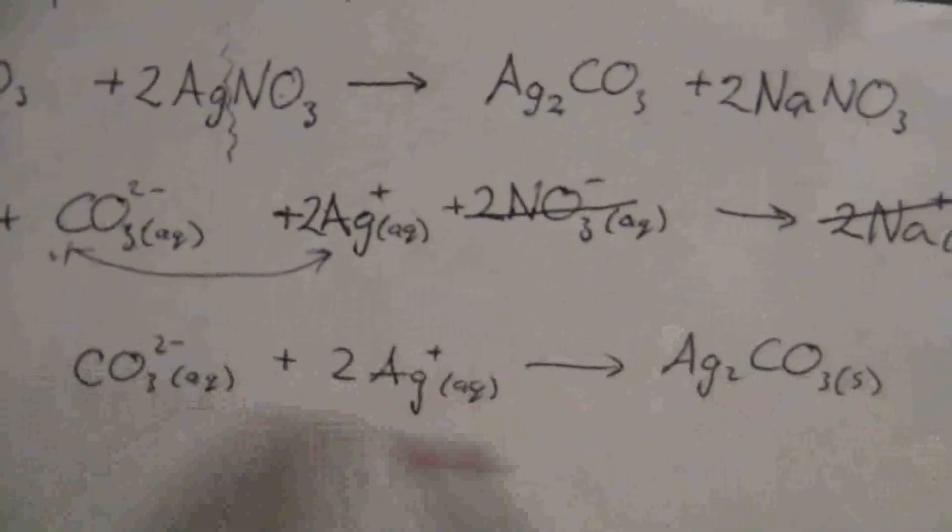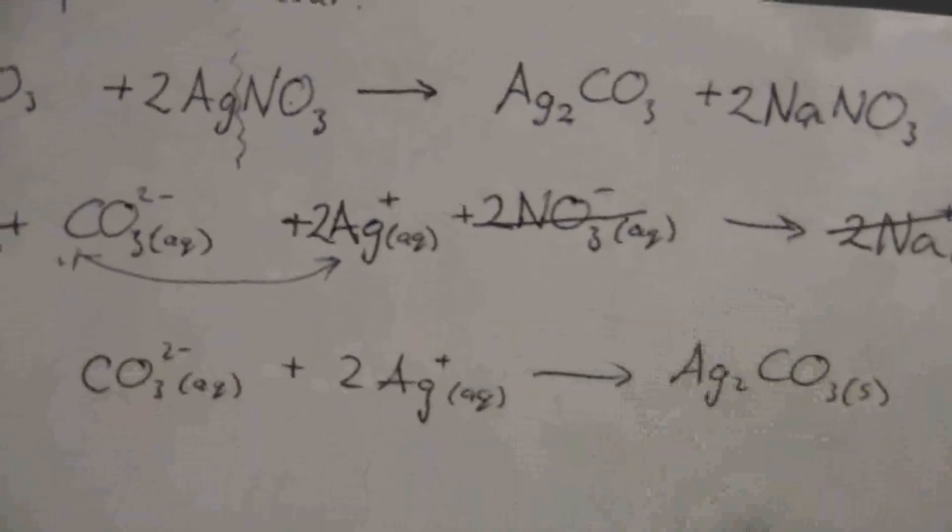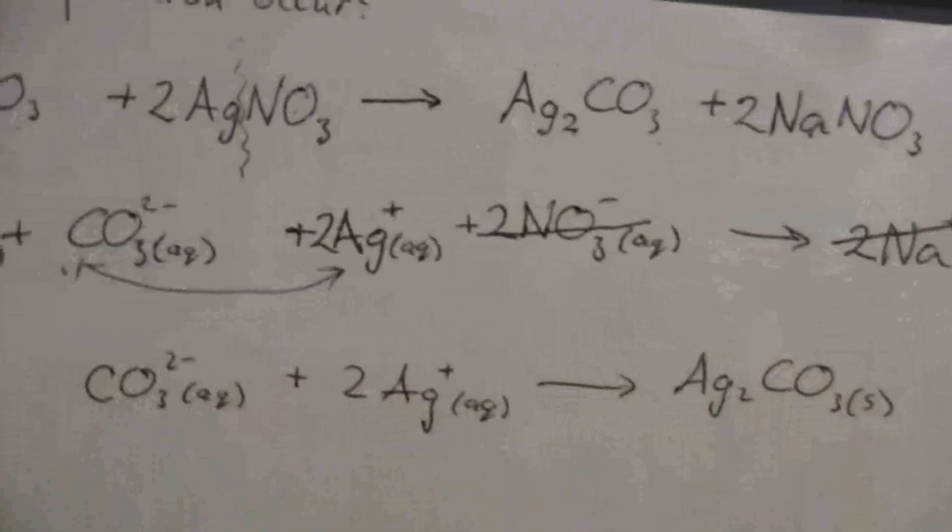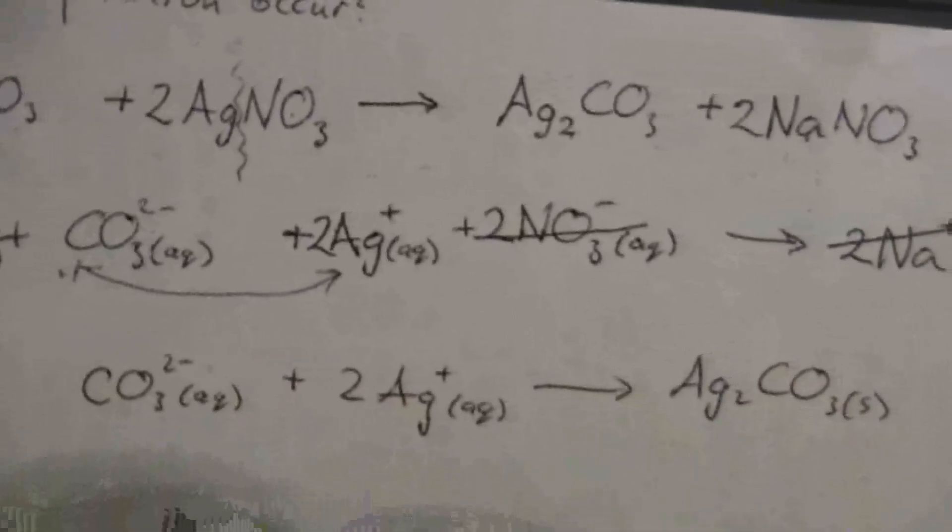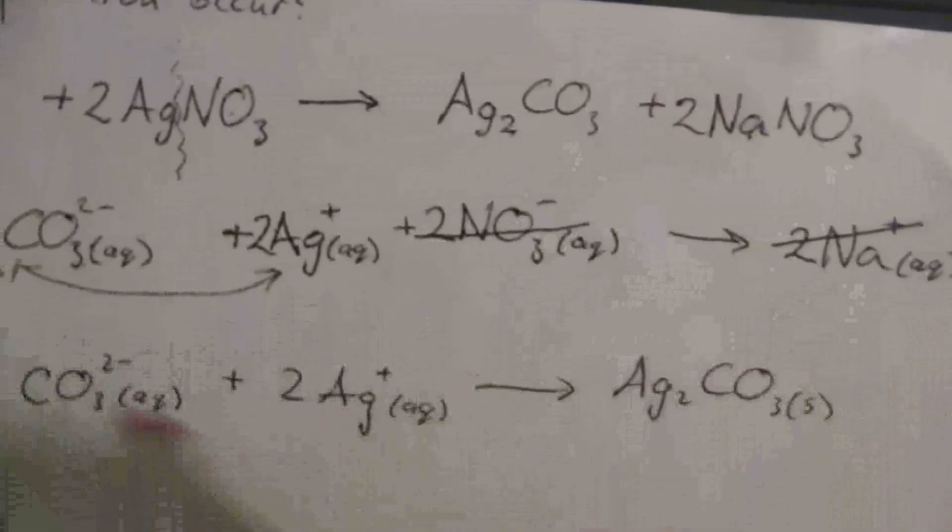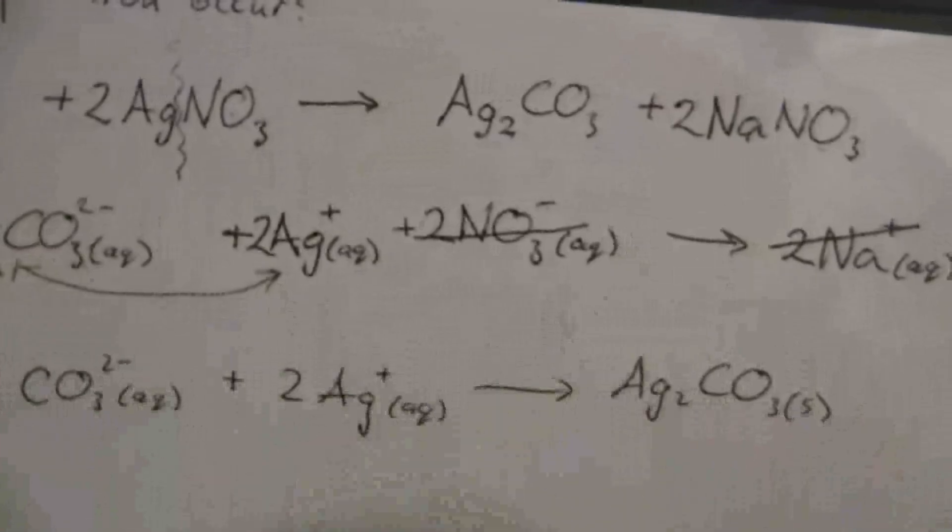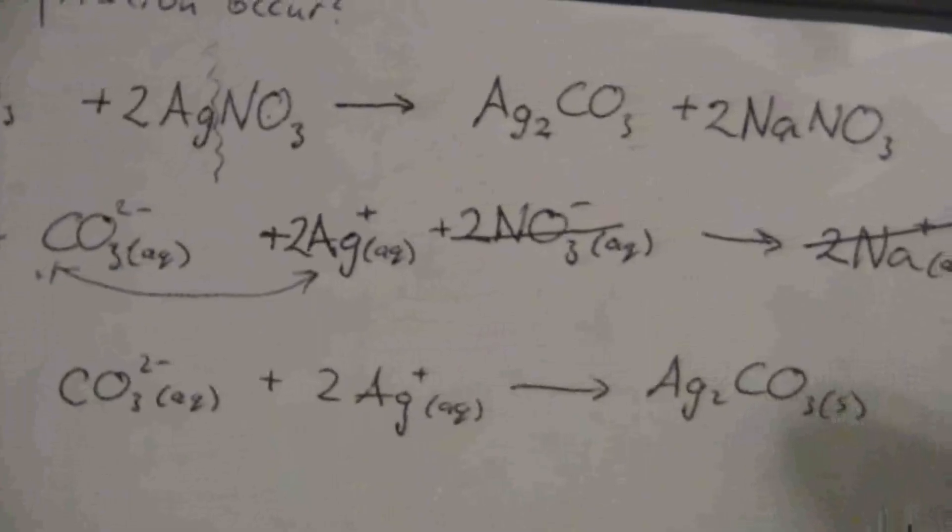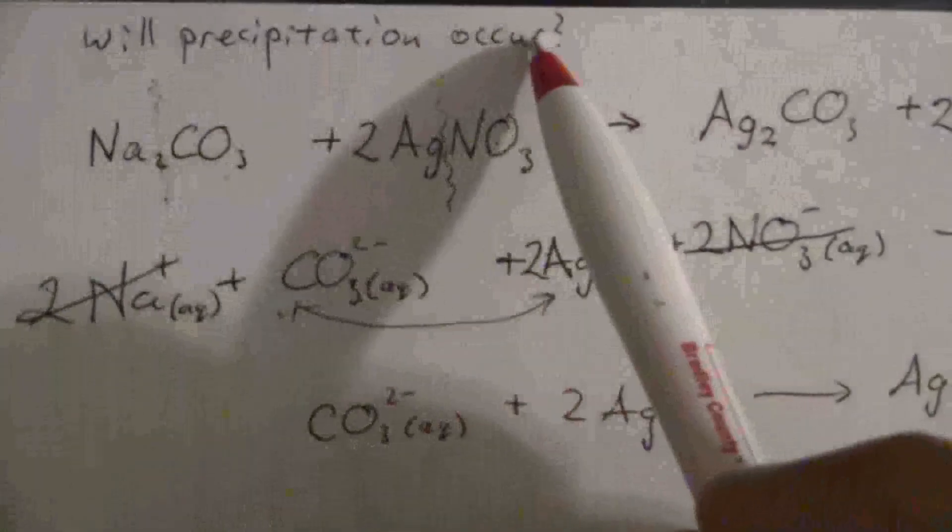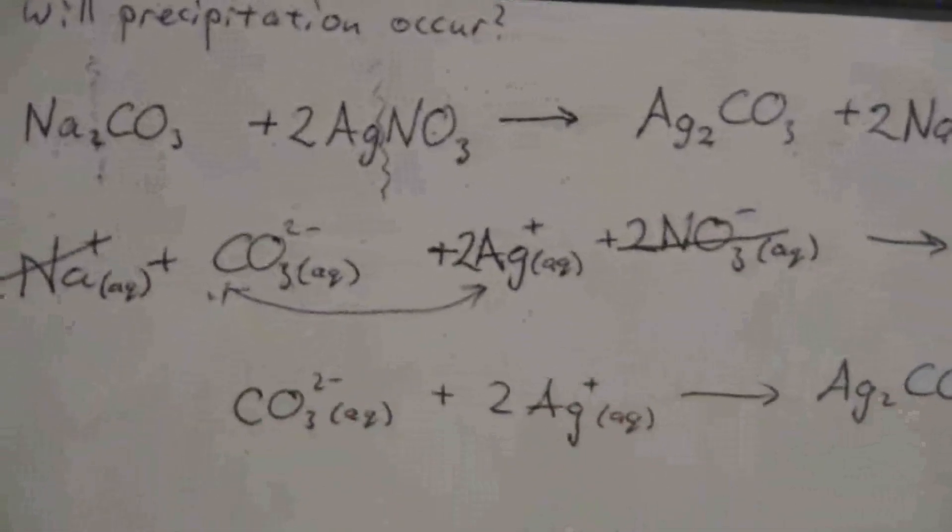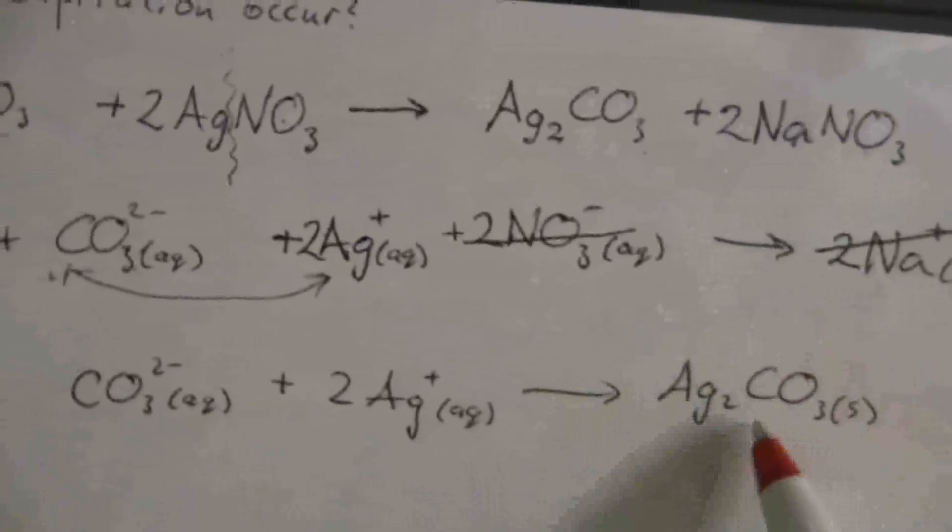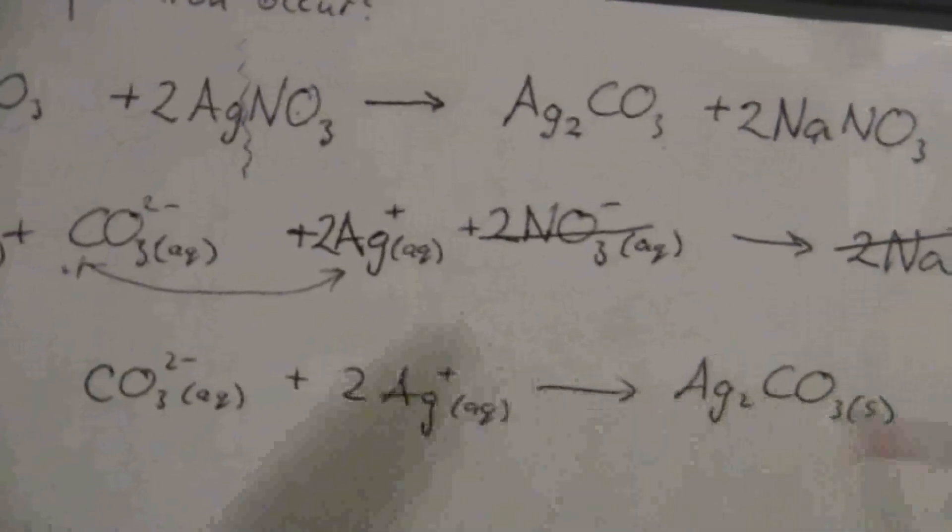And if you have a net ionic equation, then there's a reaction. That's the reaction. The silver is combining with the carbonate to form silver carbonate. Once again, like I mentioned before, if this compound were a soluble compound, they would also cancel. All of those ions would cancel. There would be no net ionic equation. That would be a case where there would be no reaction. And the answer to a question like that, would precipitation occur? There would be no net ionic equation, no reaction, no precipitation would occur. But in this example, it does because of this solid carbonate compound.